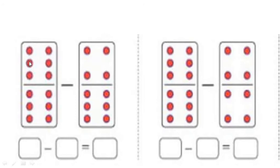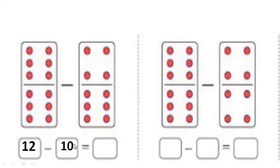There are 12 dots. Out of that, I have to cut 10. If I reduce 10 from 12, I stop at 10 and see how many dots are remaining: 1 and 2. So 12 minus 10 equals 2, which I write here.